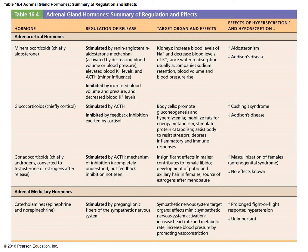This table summarizes the adrenal gland hormones — what the stimulus is, how they're inhibited, what the target cell is, the effects and functions, and what happens when you secrete too much versus not enough.